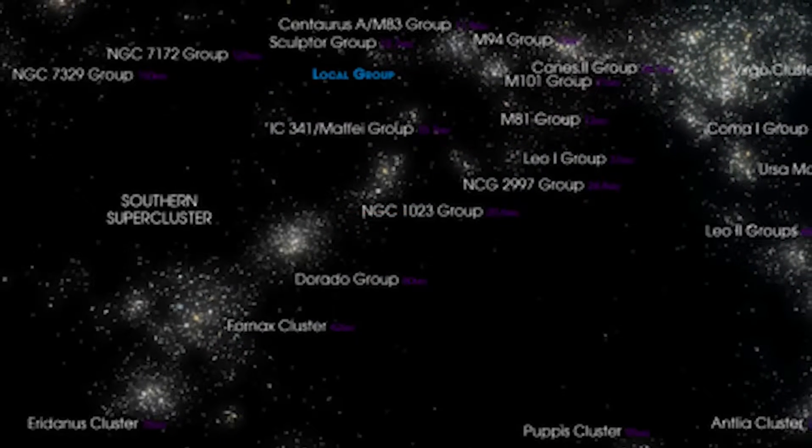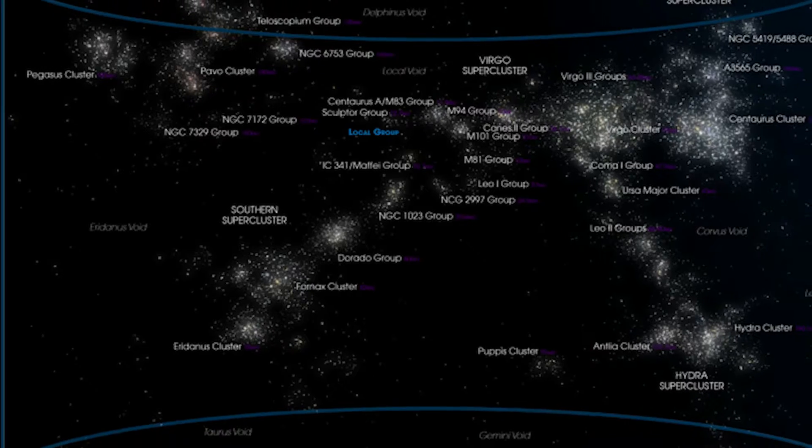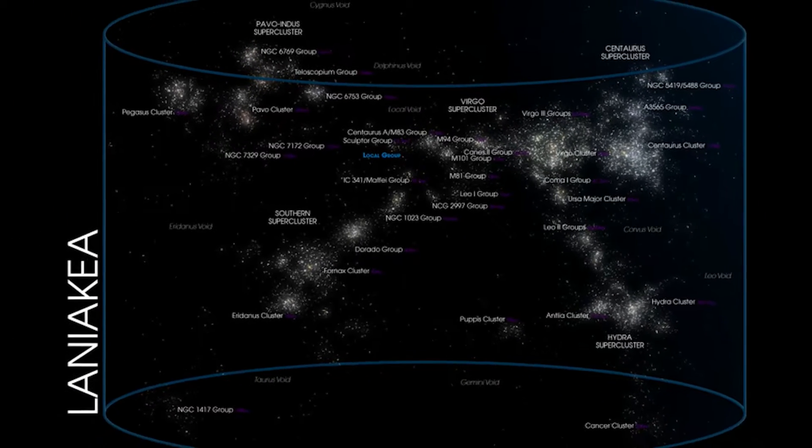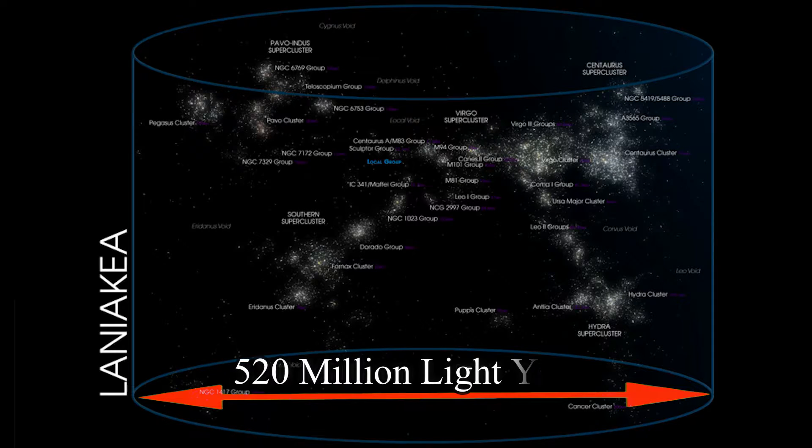But to scale this even further, the Virgo Supercluster is part of another bigger group of galaxies known as the Laniakea Supercluster. The Laniakea Supercluster contains the Milky Way Galaxy along with approximately another 100,000 surrounding nearby galaxies and is a total distance of 520 million light years from one end to the other.